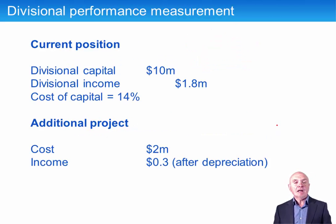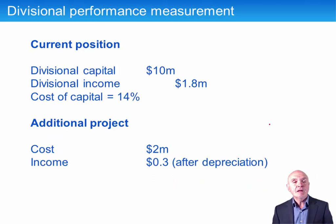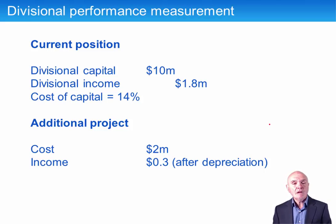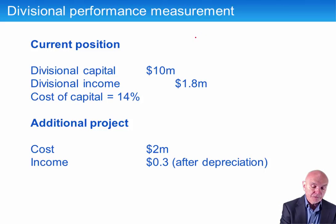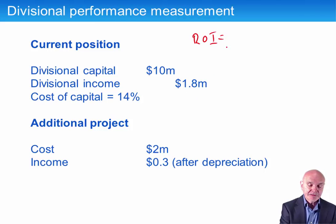Let's look at a couple of examples. Our starting position: divisional capital of £10 million and divisional income of £1.8 million. The return on investment is 1.8 million over 10 million, expressed as a percentage — 18%.